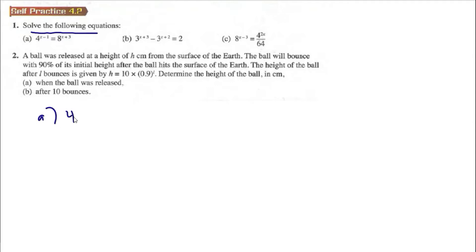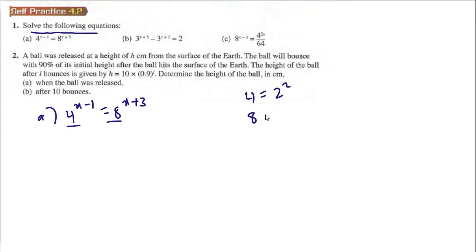4^(x-1) = 8^(x+3). For this kind of question it will be easier if you find the same base. 4 is equal to 2 to the power of 2, and 8 is equal to 2 to the power of 3. So 2^(2(x-1)) is equal to 2^(3(x+3)).